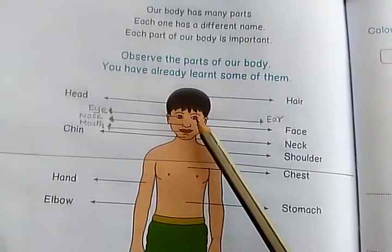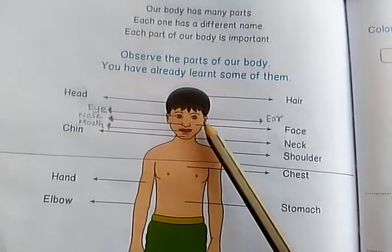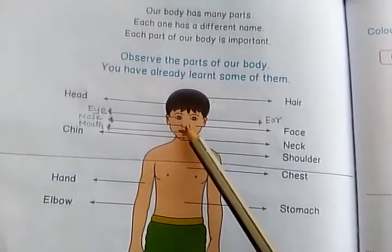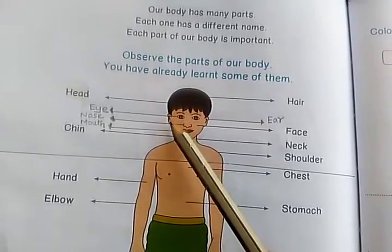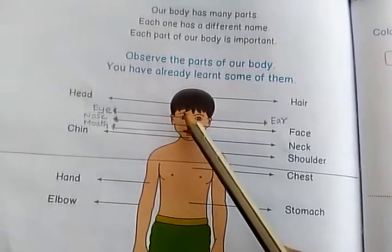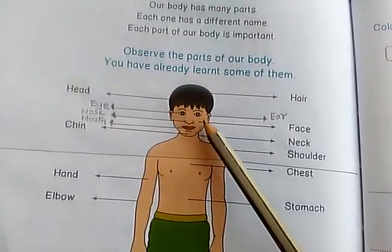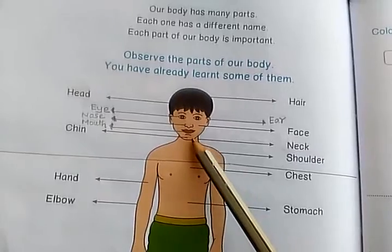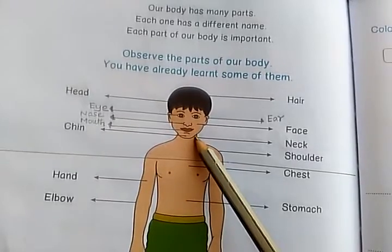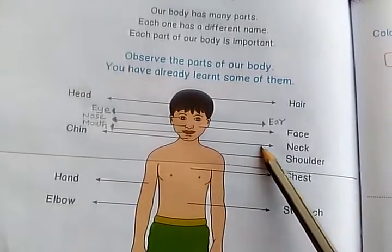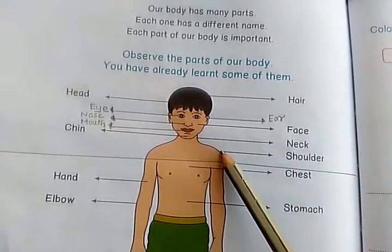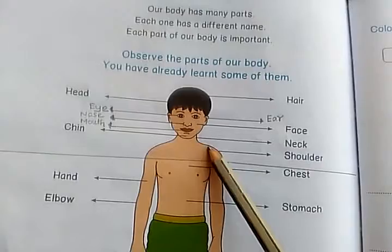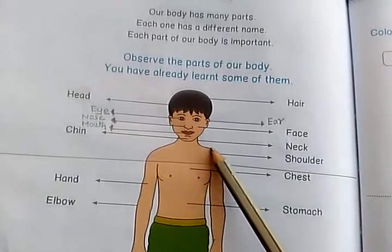Face has eye, ear, nose, mouth. This is face. Then what is this? Neck. Then what is this? Shoulder.